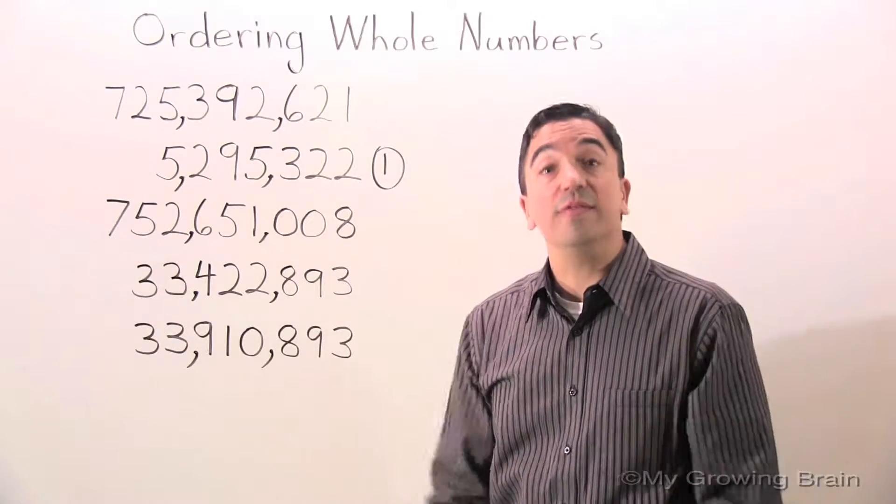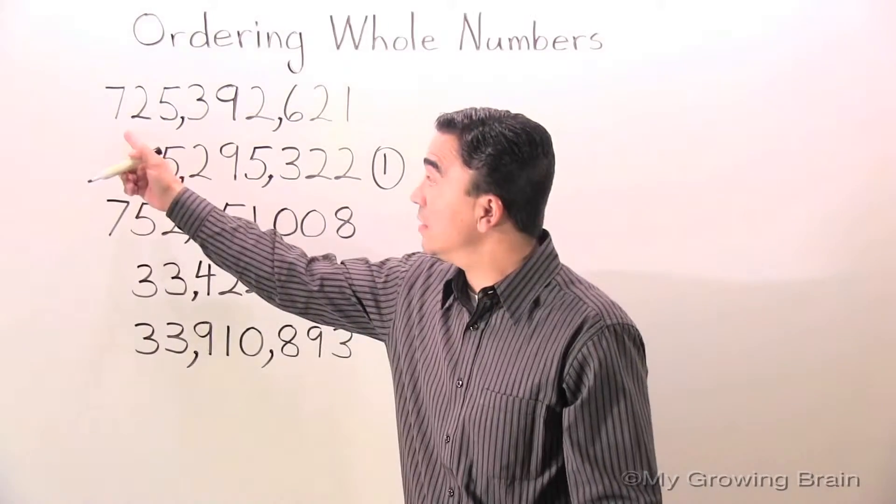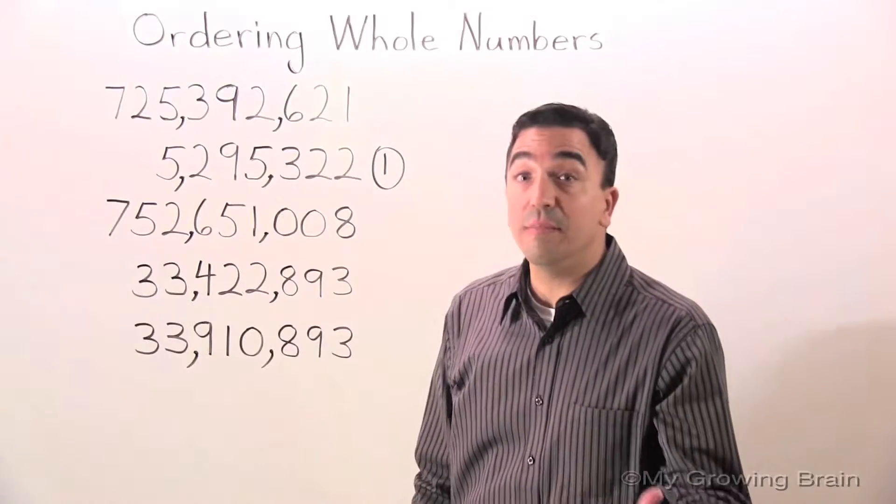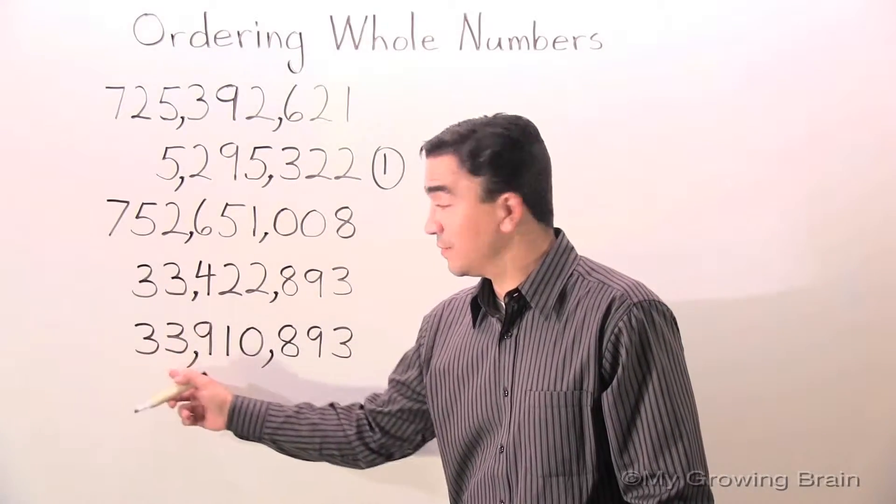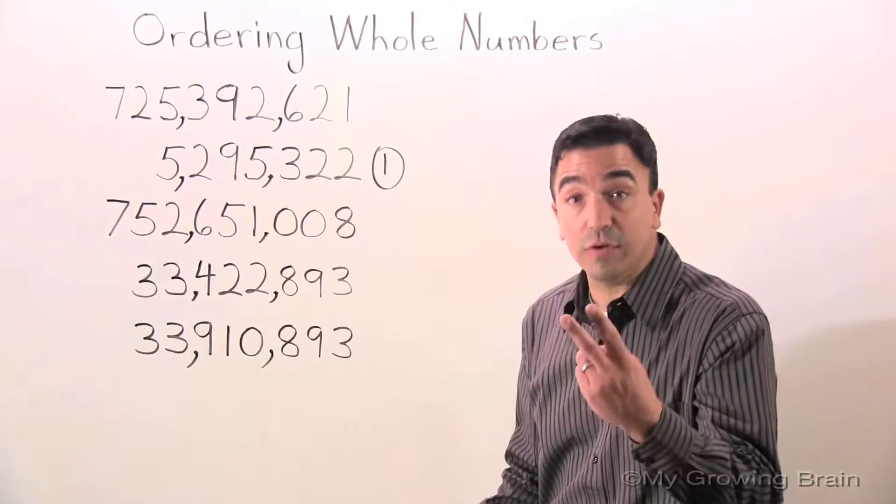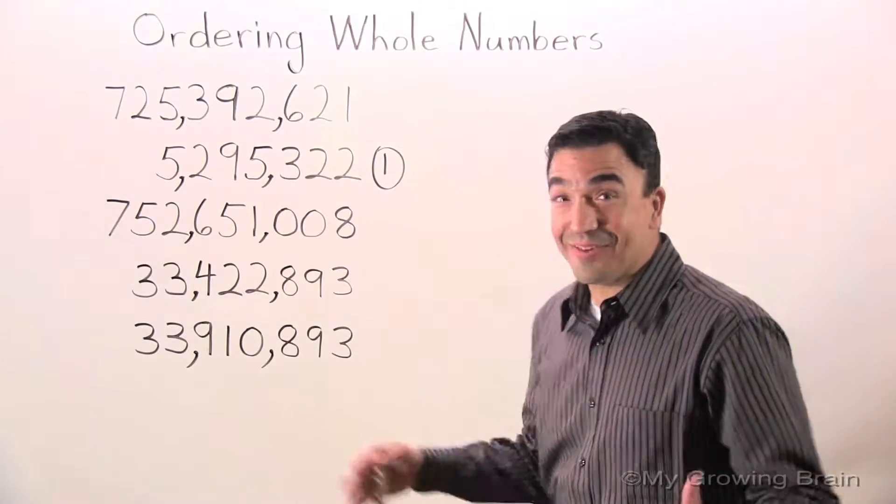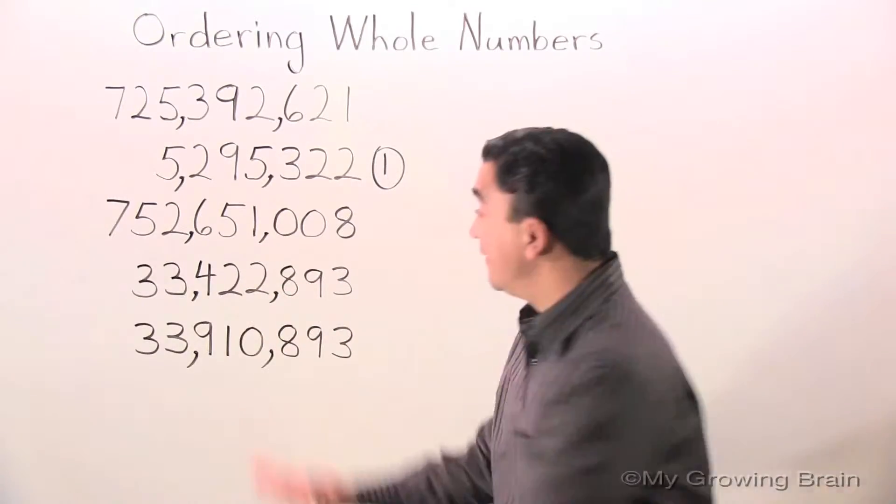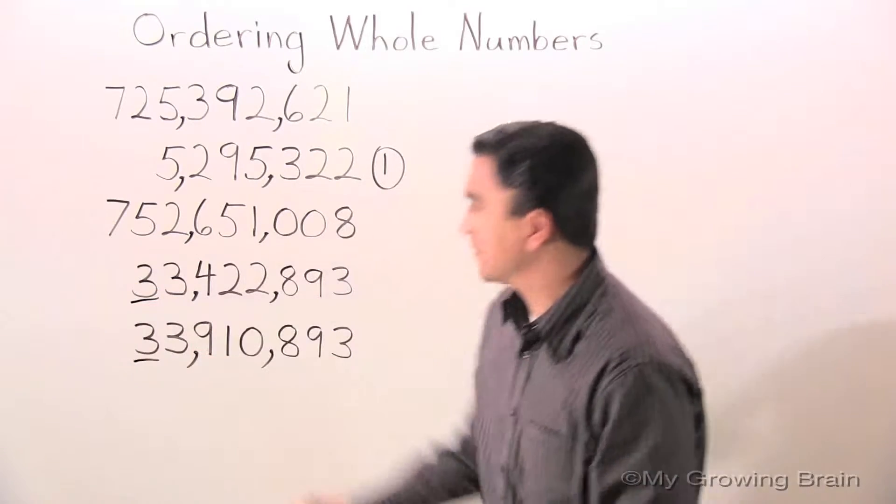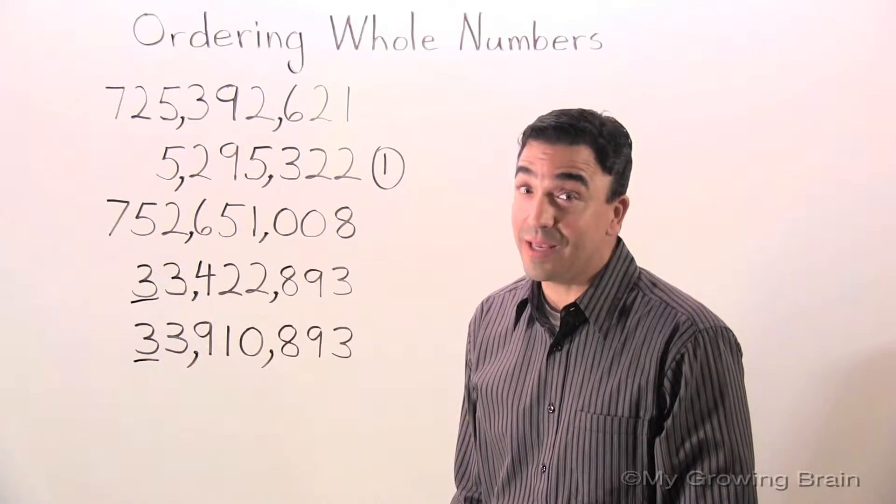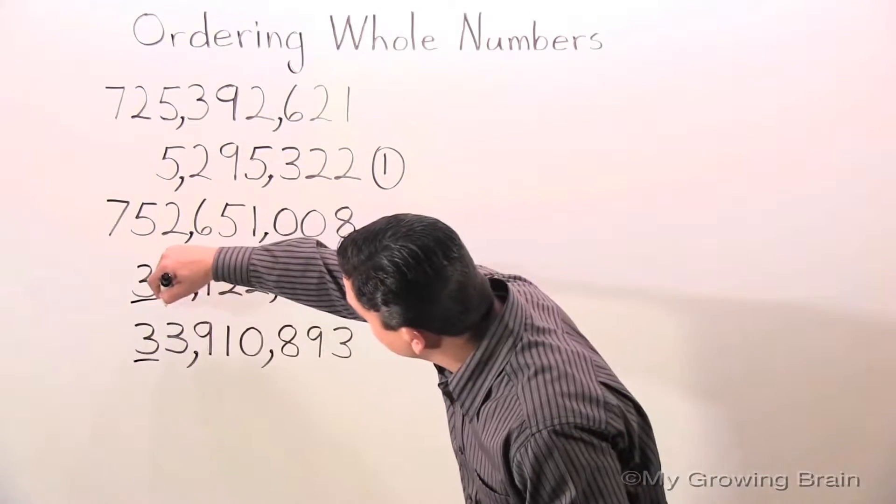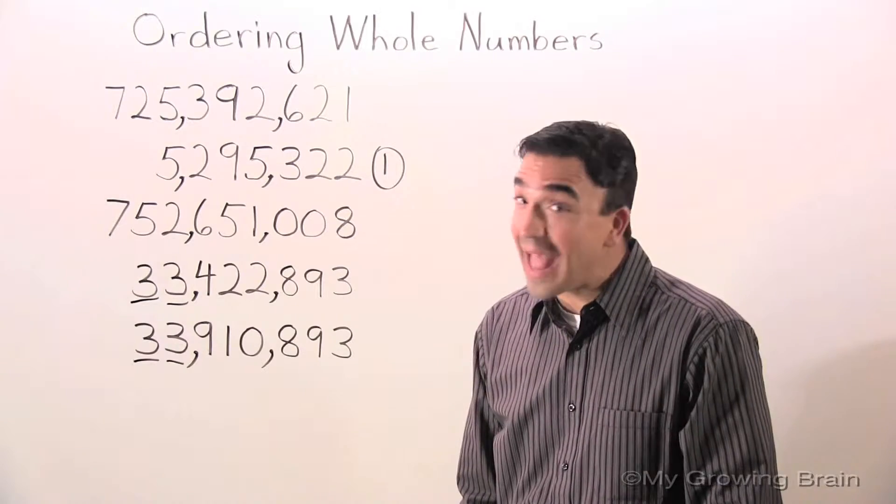Now, let's see what goes next. Once again, three digits, three digits in the millions period. Two digits in the millions period. So one of these two numbers will be number two. So let's start comparing in the ten millions place. Three and three, it's the same. So let's go to the millions place. Three and three, still the same.